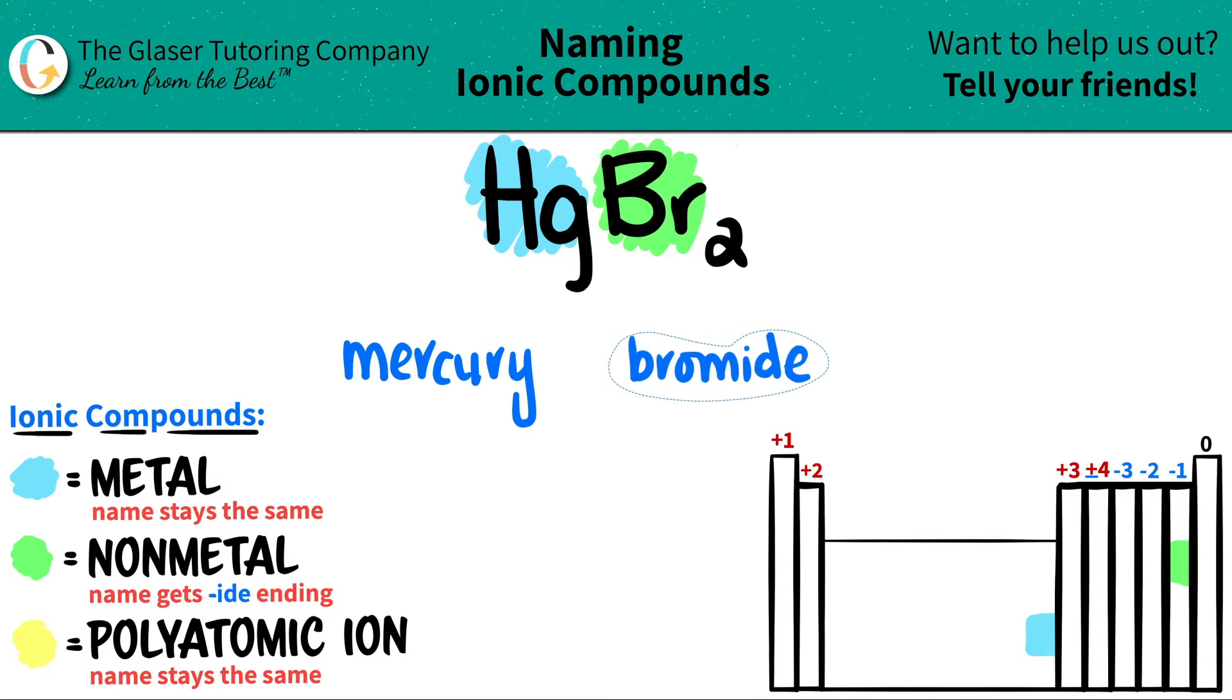Now, the next thing that we have to figure out is do I need a roman numeral or not? Roman numerals are only used for transitional metals, which is this block right here. Since mercury is a transitional metal or a transition metal, I do need a roman numeral.